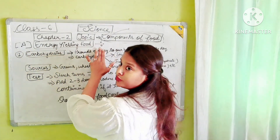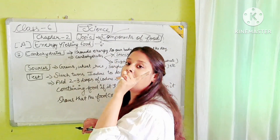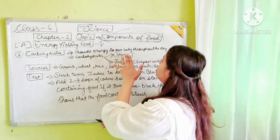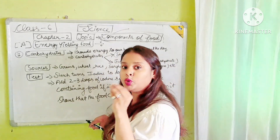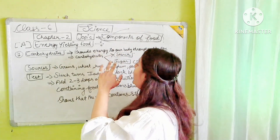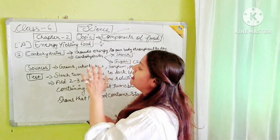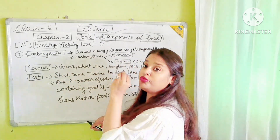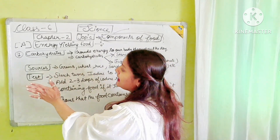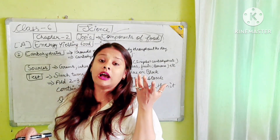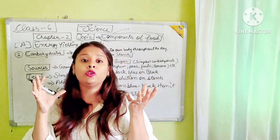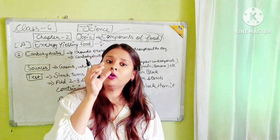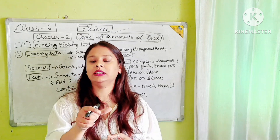Let's start with energy yielding food. First is carbohydrates. Carbohydrates provide energy to our body throughout the day. What are the sources of carbohydrates? They include grains, wheat, rice, sorghum, peanuts, fruits, onions, banana, melon, and more. So carbohydrates are our main source of energy.